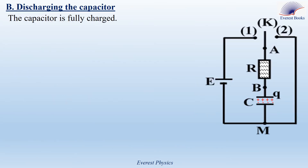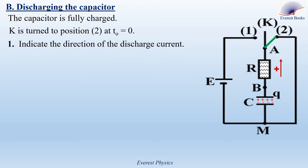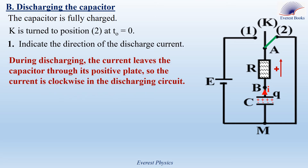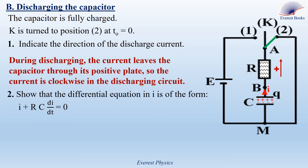Discharging the capacitor. The capacitor is fully charged. The switch is turned to position 2 at time 0. Part 1: indicate the direction of the discharge current. During discharging, the current leaves the positive plate of the capacitor, so the discharge current flows in the discharge circuit in the clockwise sense. Number 2: show that the differential equation in the current is of the form I plus RC di by dt equals 0.